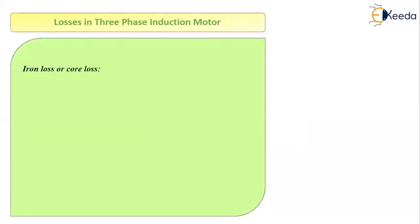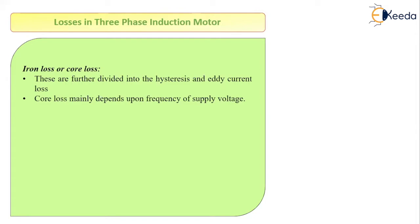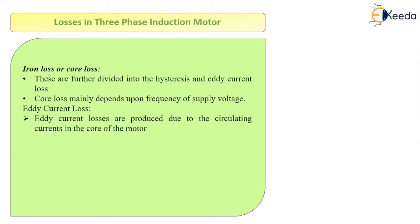The iron loss or core loss is mainly due to the voltage applied to the motor. Because of this voltage, a magnetic field or flux is produced, and iron loss depends directly on the flux. These losses are further divided into hysteresis loss and eddy current loss. Core loss mostly depends on the frequency of the supply voltage. Eddy current loss is produced due to circulating currents called eddy currents in the core of the motor. Eddy current loss can be minimized by using a laminated core.